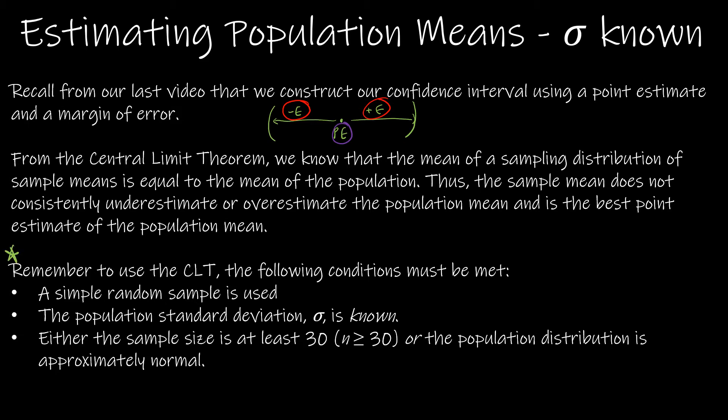In order to use the central limit theorem for population means for this specific interval, we need to know that a simple random sample was used, which means every subject or every sample had an equal chance of being chosen. In this case, because sigma is known, we need to know sigma, and either the sample size is at least 30 or the population distribution is approximately normal.